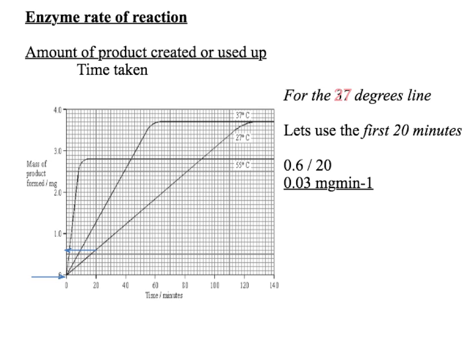You could be asked to work out the enzyme rate of reaction using the formula: amount of product created divided by time taken. In this case, using the mass of product divided by time, for the 27-degree line. Over the first 20 minutes, reading off the graph gives 0.6 milligrams of product created. So 0.6 divided by 20 minutes gives 0.03 milligrams per minute — that is the enzyme rate of reaction at 27 degrees.